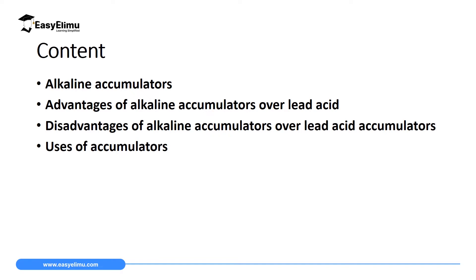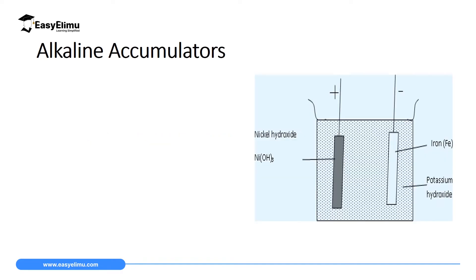Just like lead acid accumulators, alkaline accumulators also have electrodes. In this case we have nickel hydroxide as the anode or positive electrode, and iron metal as the cathode or negative electrode. In the lead acid accumulator we used lead metal as our anode, but here we substitute it with nickel hydroxide, and iron replaces lead at the cathode.